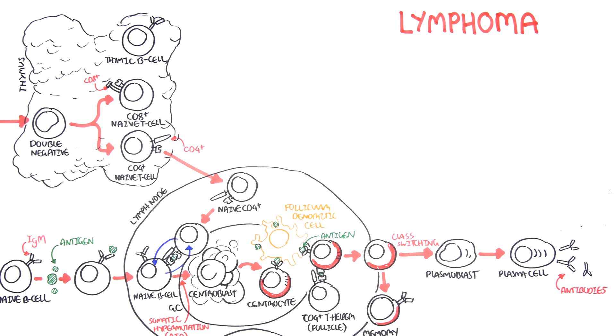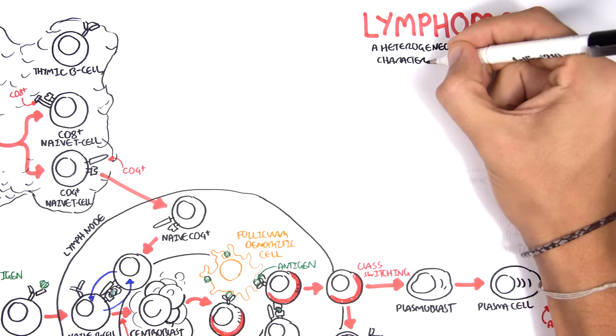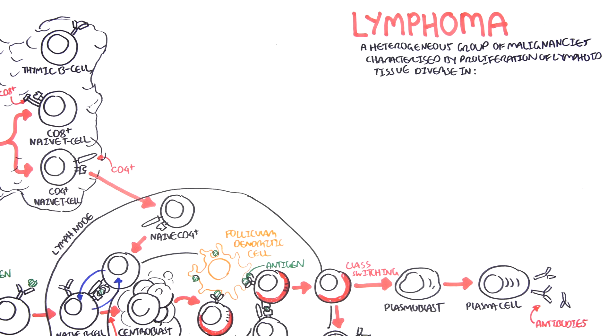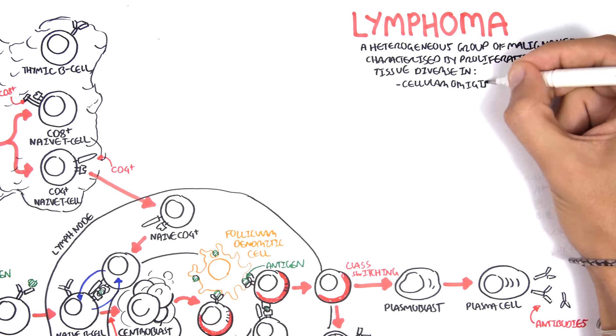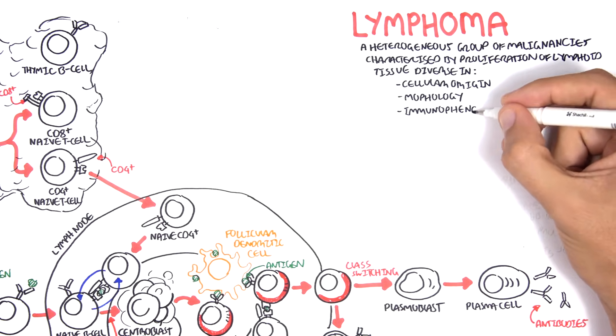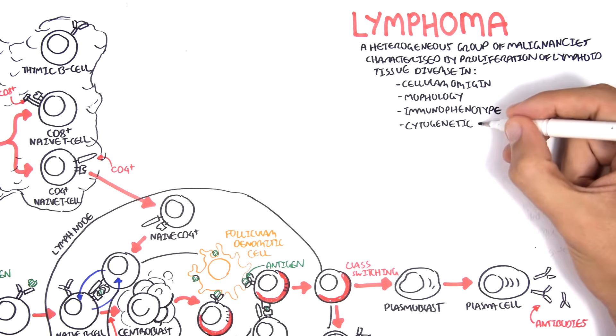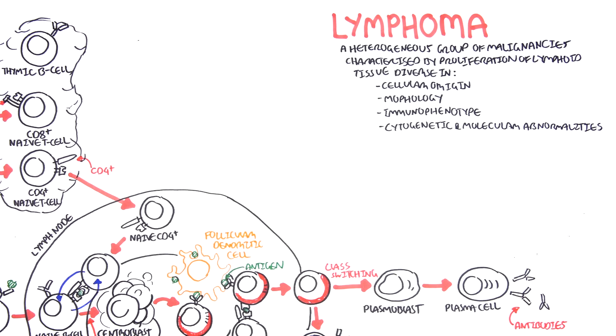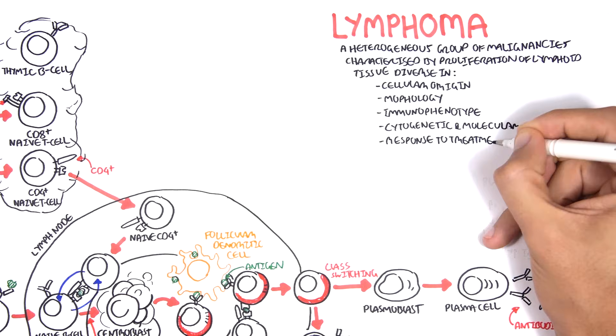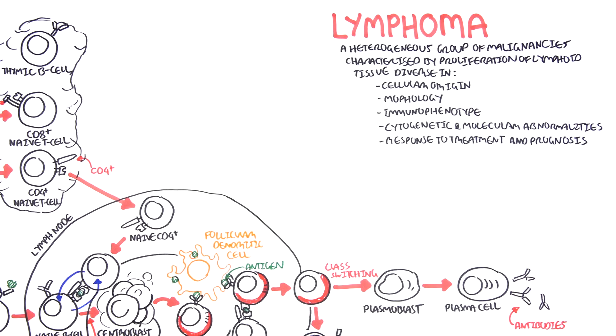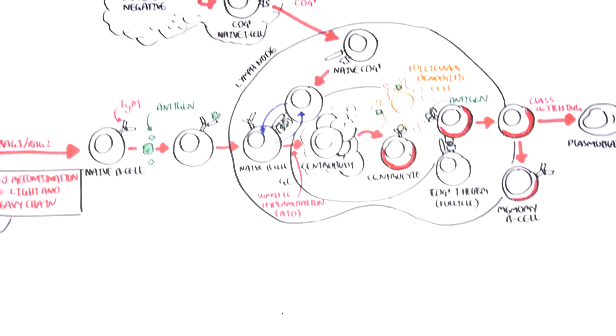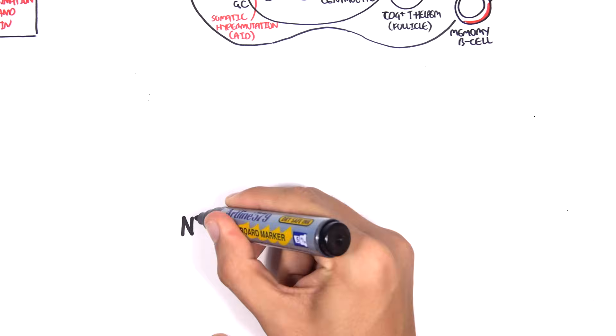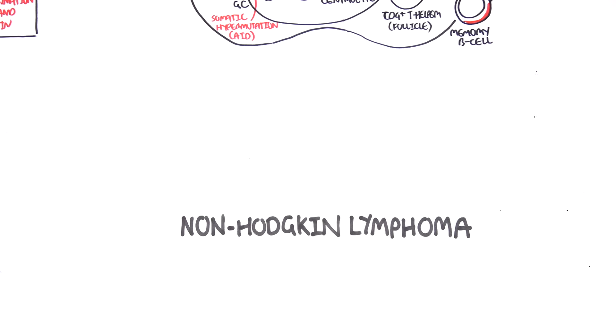Lymphoma is a heterogeneous group of malignancies characterized by proliferation of lymphoid tissue. They are diverse in cellular origin, morphology, immunophenotype, cytogenetic and molecular abnormalities, and they're different in response to treatment and prognosis. Lymphoma can be categorized into two broad categories: Hodgkin's and non-Hodgkin's lymphoma. In this video, we will focus on non-Hodgkin's lymphoma, which is the sixth most frequent cancer and it is increasing in prevalence.